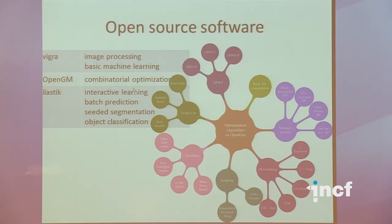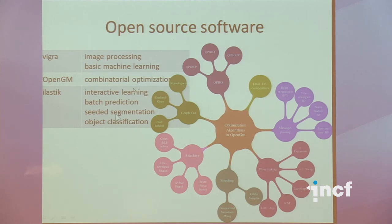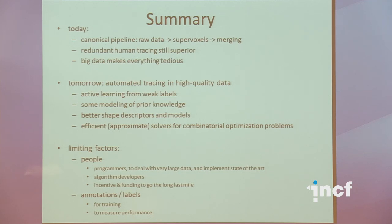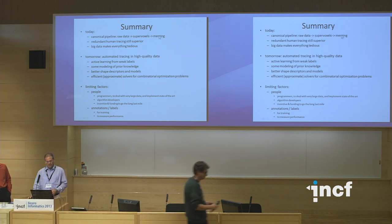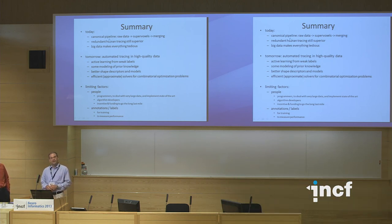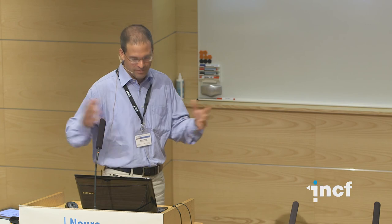To wrap up: we developed these things open source, using VIGRA for image processing and basic machine learning, OpenGM for combinatorial optimization (implementing or wrapping all state-of-the-art inference methods), and Elastic for interactive learning, batch prediction, seeded segmentation, and object classification. The canonical pipeline goes from raw data to super voxels to a merging step. Right now even a single human is still better than us — but redundant tracing by many humans is required for fully accurate results — and the sheer amount of data makes everything hard.